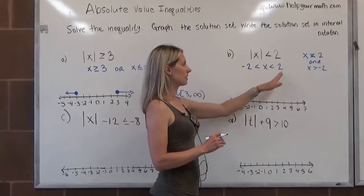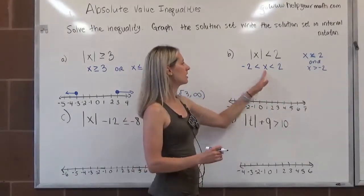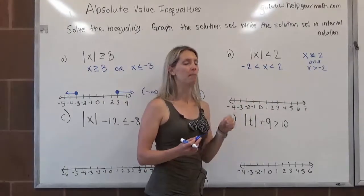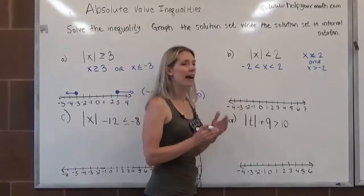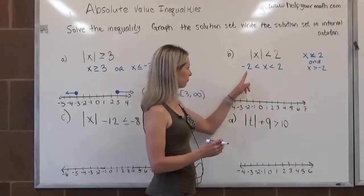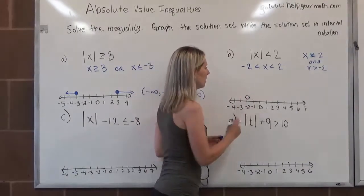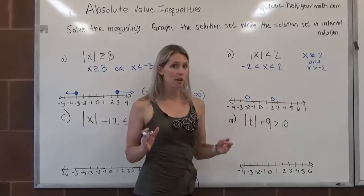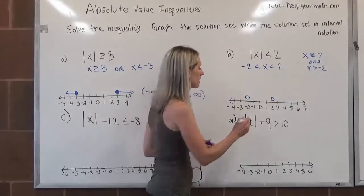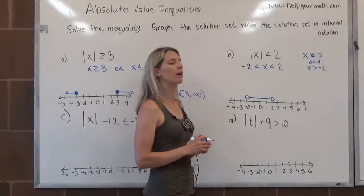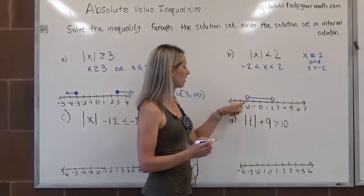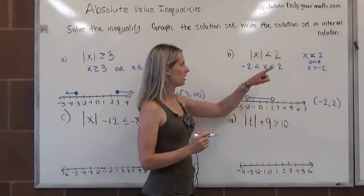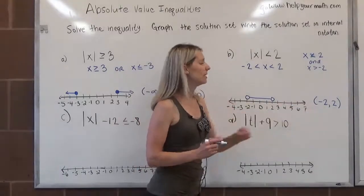Back to B: we have negative 2 is less than x is less than 2. Here we have three sides — left, middle, and right — and we verify that the middle has the variable isolated, which it does. For the graph, we have one open circle at negative 2 and another open circle at 2. All the solutions — numbers closer than 2 from 0 — lie in between negative 2 and 2. In interval notation, since neither endpoint is included, we write from negative 2 to 2 using parentheses.